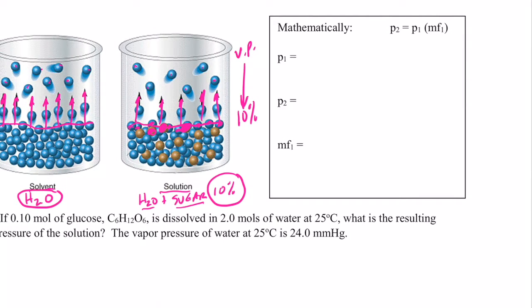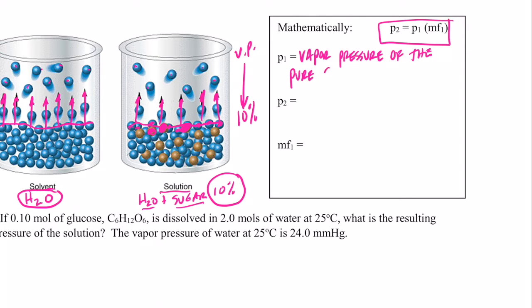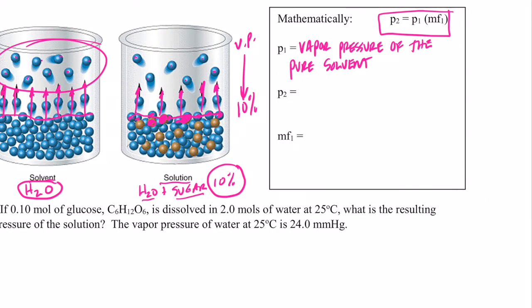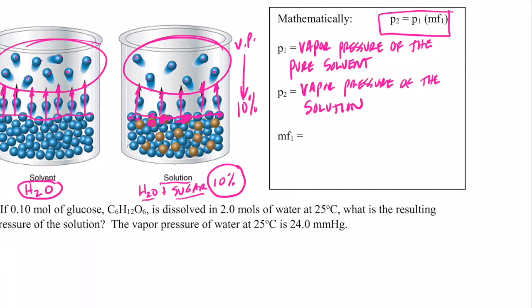Let's look at a mathematical equation to help us solve problems. We have P₂ = P₁ × MF₁. P₁ is simply the vapor pressure of the pure solvent — that would be the vapor pressure exerted by the pure solvent beaker. MF₁ is the mole fraction of the solvent.